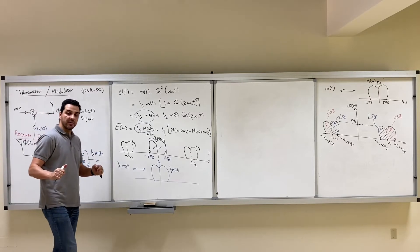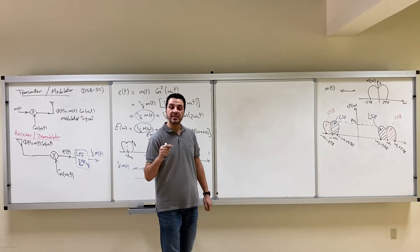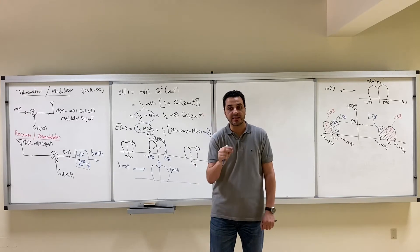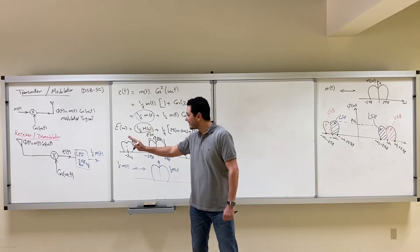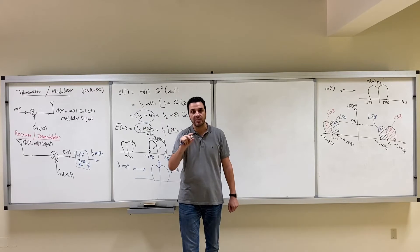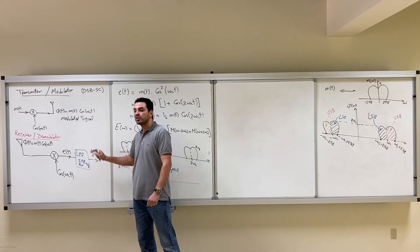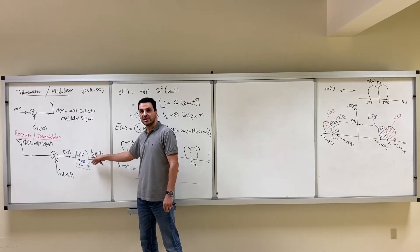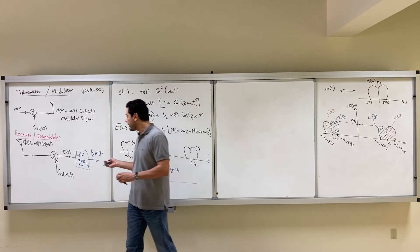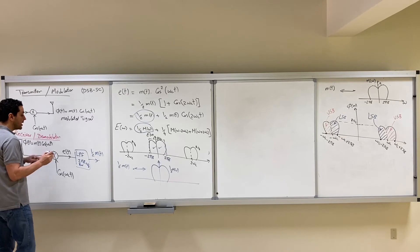Using a low-pass filter with bandwidth 2B radians per second gives us ½M(t). Some people worry that we got M(t) multiplied by ½, but multiplying by a constant does not distort the signal — it just changes the amplitude, like lowering or raising the volume. We can remove this factor with a simple amplifier and retrieve M(t) without any distortion.